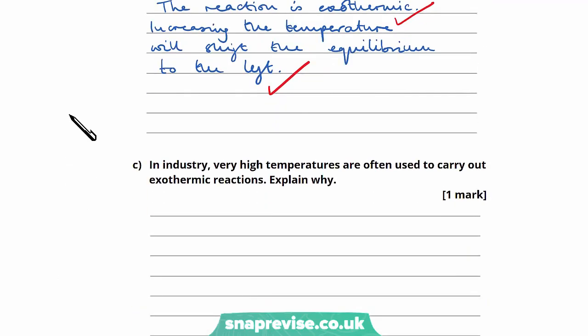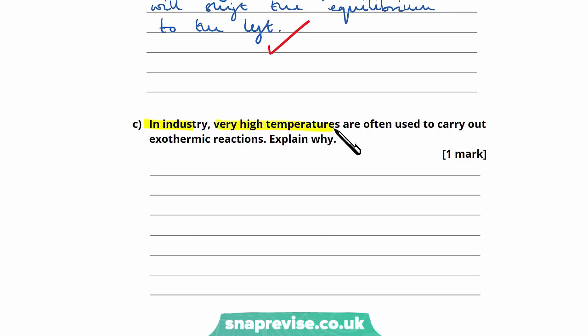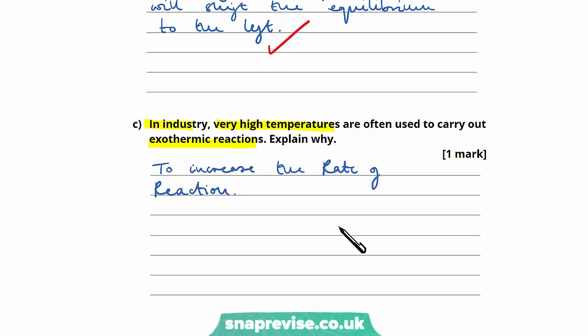Part C: In industry, very high temperatures are often used to carry out exothermic reactions. Although it seems counterintuitive, the high temperatures increase the rate of reaction, and that is exactly why. Questions like these can be tricky — you need to relate basic principles and apply them to the question. Even though high temperatures seem counterproductive for exothermic reactions, it's important to think about why those high temperatures might be useful.